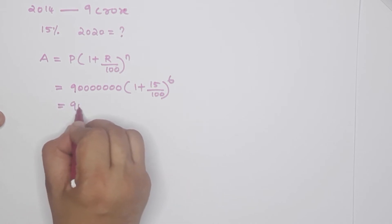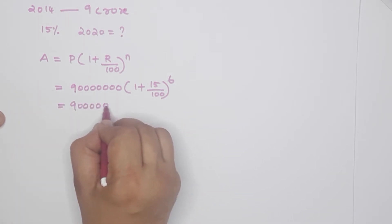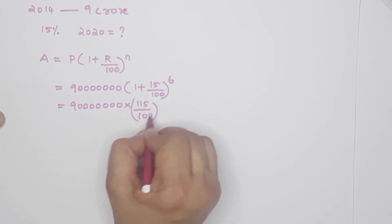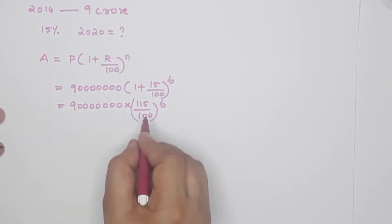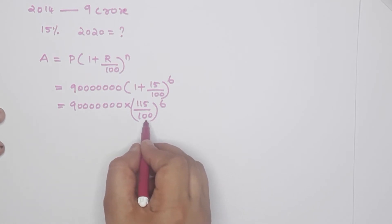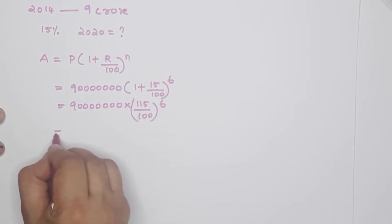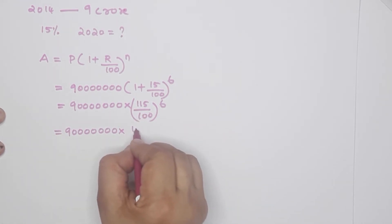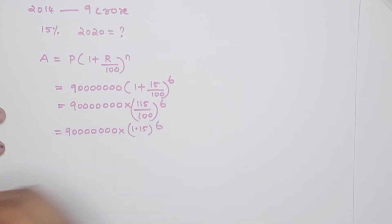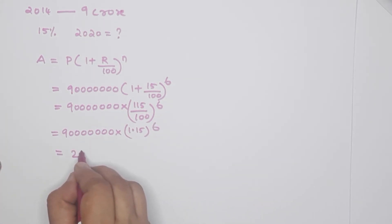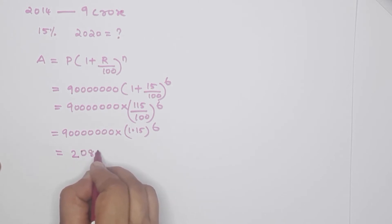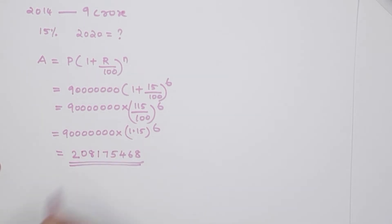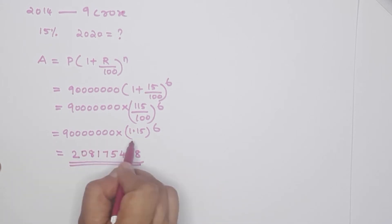So we have 9 times 10 to the power 7, into 1 plus 15 by 100, whole raise to 6. That is 115 by 100, whole raise to 6 — which is 1.15 raised to 6. We multiply this in the calculator. The result is 208175468. These marks are full mark. Question is clear.